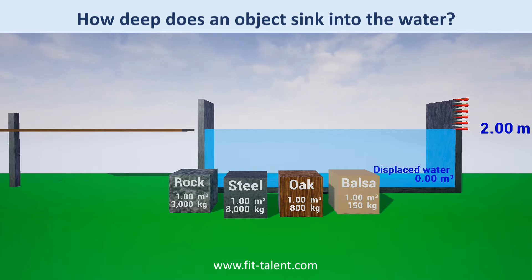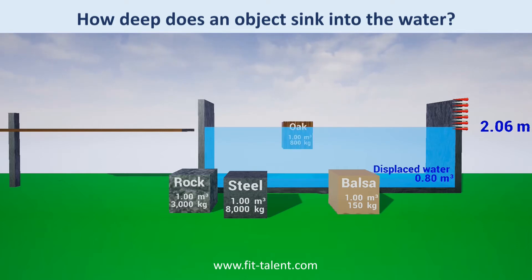Oak wood has 80% of the density of water. 80% of its volume sinks in, displacing 80% of a cubic meter of water, which is exactly 0.8 cubic meters.